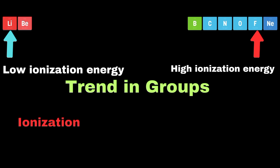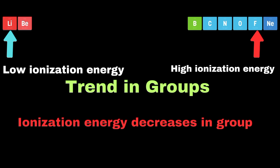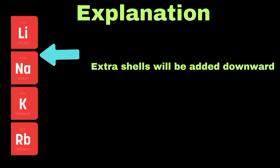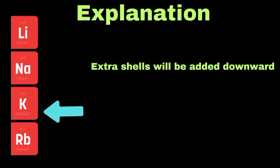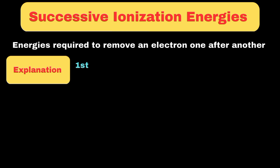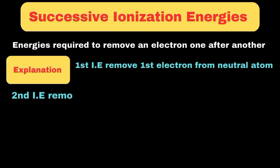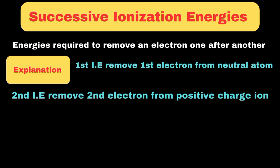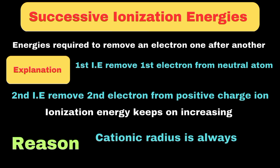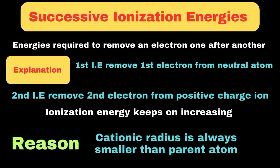Moving to the trend down a group, ionization energy decreases as we go down. Consider the alkali metals lithium, sodium, potassium, and rubidium. As we go down this group, each element has its outer electron in a new shell that is further from the nucleus. Although the nuclear charge increases, the distance of the outer electron from the nucleus has a stronger effect. Regarding successive ionization energies — the energies required to remove electrons one after another — the first ionization energy removes one electron from a neutral atom, the second removes another from the resulting positive ion, and so on. Each successive ionization energy is always larger than the previous one, because the cationic radius is always smaller than its parent atom, and it is more difficult to remove an electron that is closer to the nucleus.